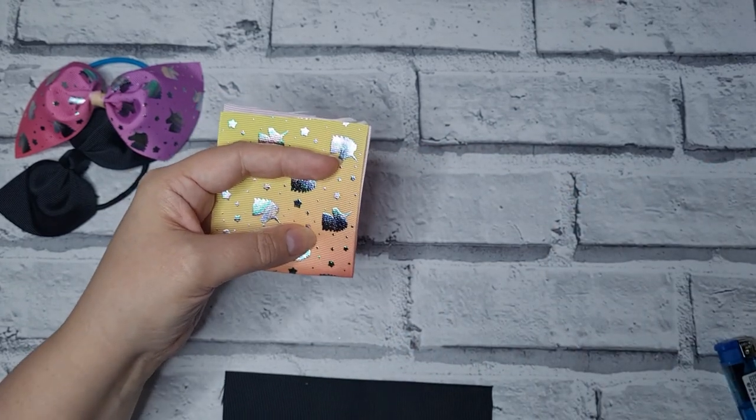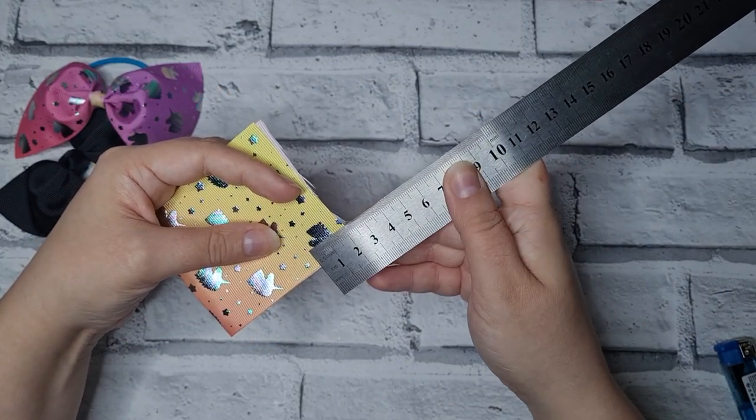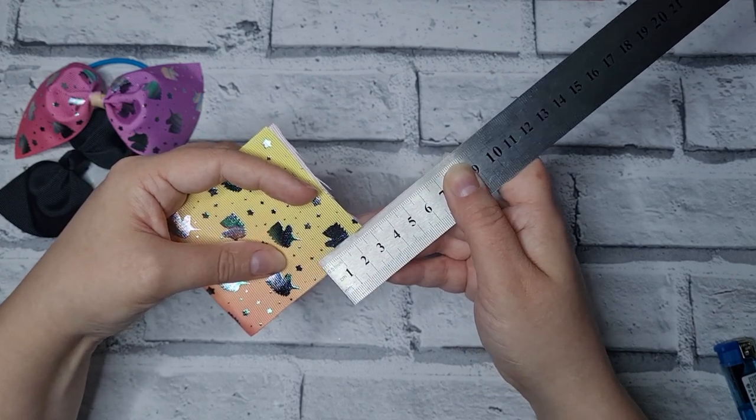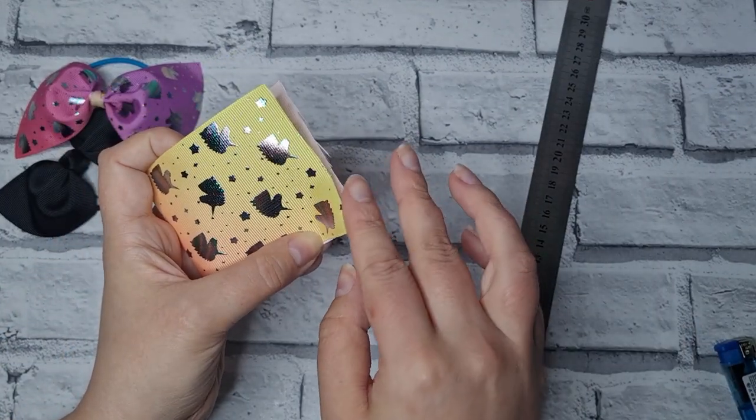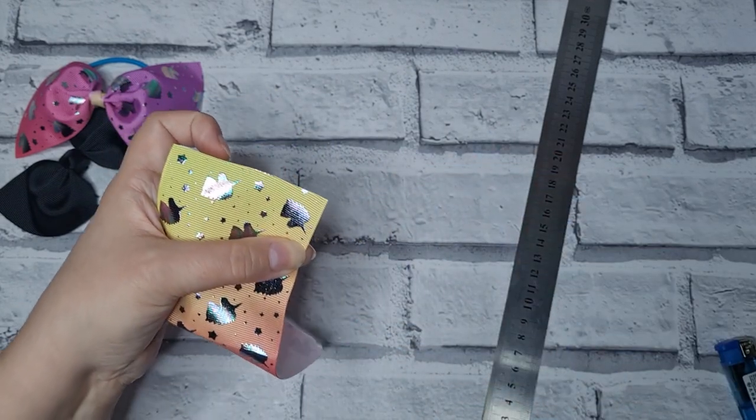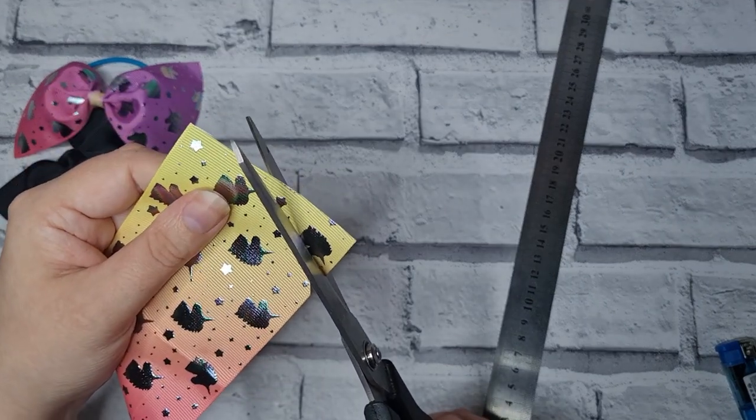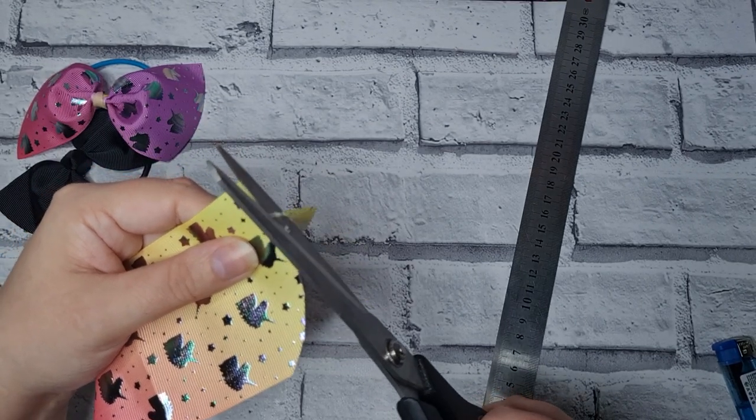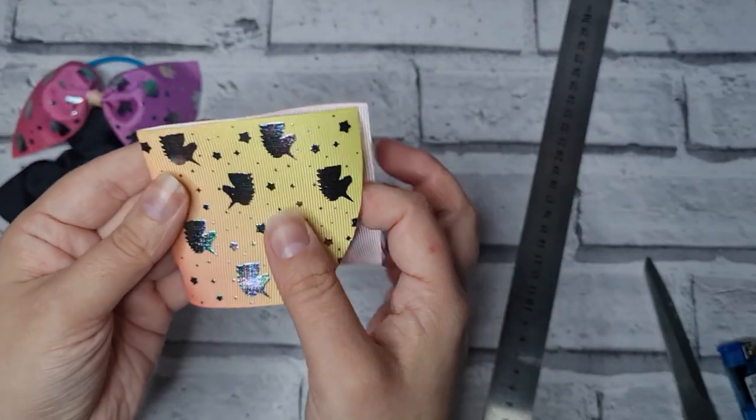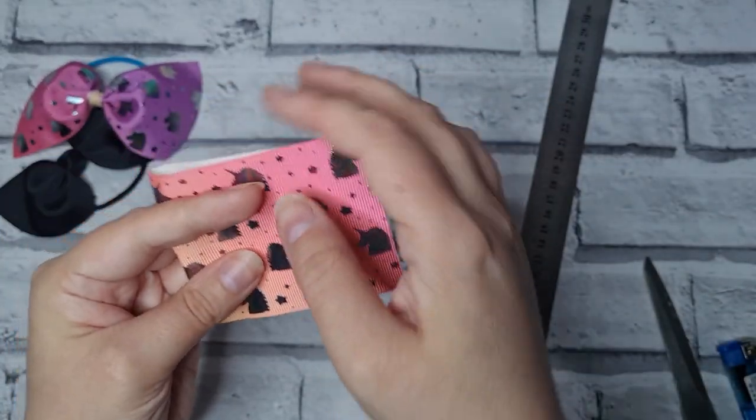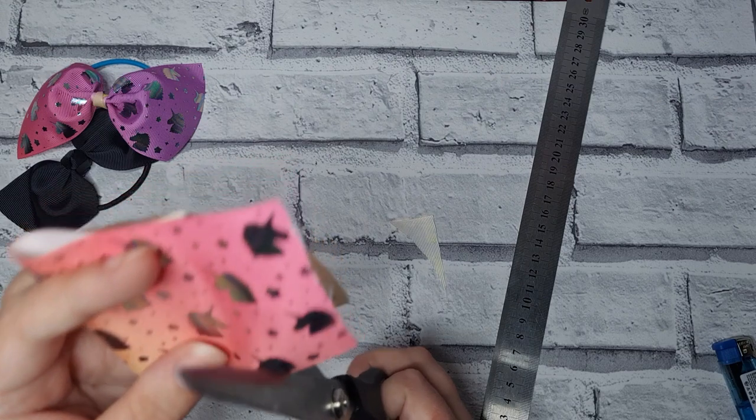Now you can measure it or you can sort of guesstimate depending on how you work. This one depends on how deep you want it as well, because you can go deeper or lower. I tend to do about one and a half centimeters from the edge, or an inch depending on how you work with measurements. Then you just gently curve around until you reach there.